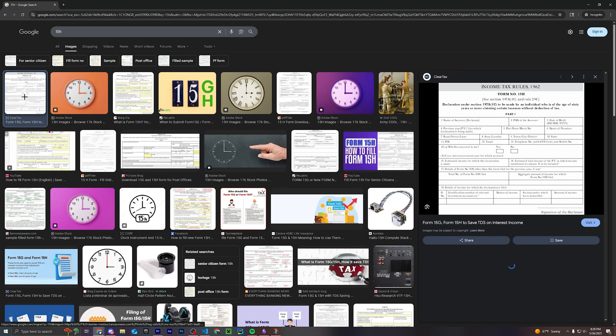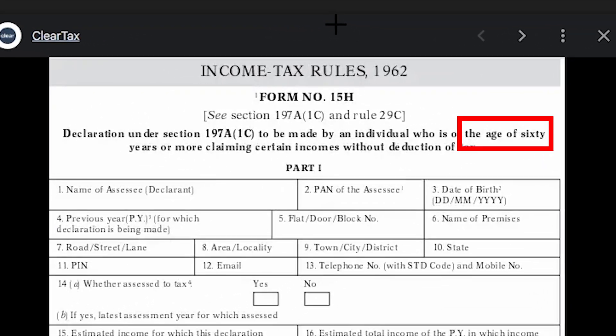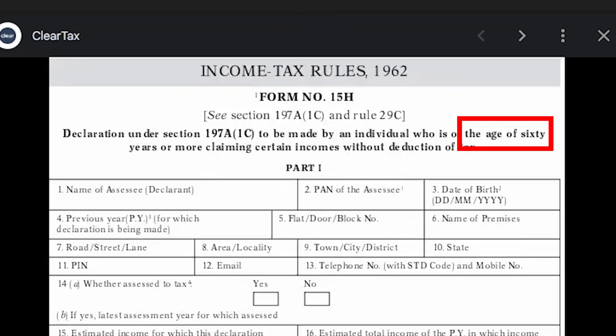So to start the proof, we have to google the controversial skyblock player 15h. This brings up tax form 15h, which is to be filled out by adults of age no less than 60. This means that 15h is 60.